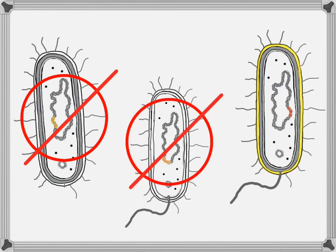But what about our third bacteria? We said it's got maybe a thicker cell wall and a slightly different chemical makeup in its capsule. That might make it harder for things that want to eat it to find it. This bacteria might actually be bigger, better, stronger, tougher, harder to kill. From the bacteria's perspective, this particular mutation might be really beneficial.